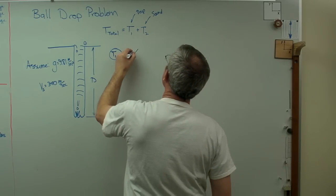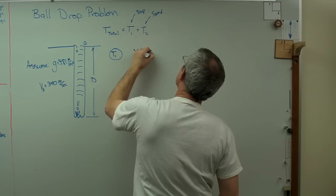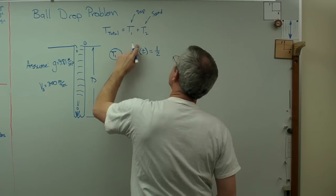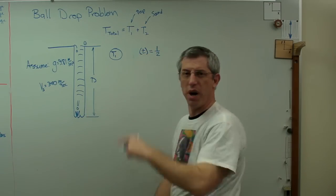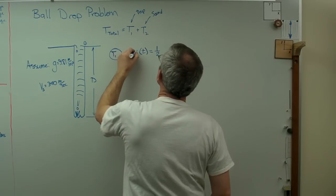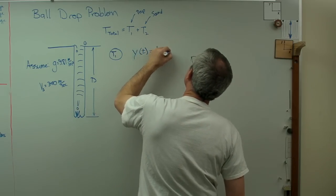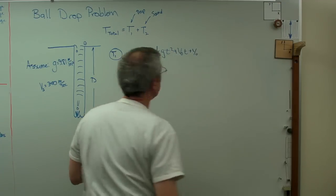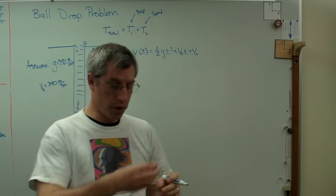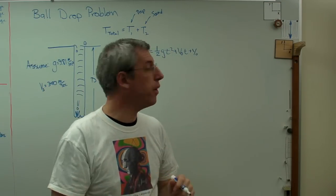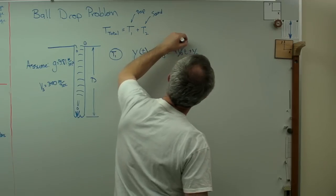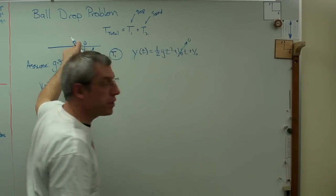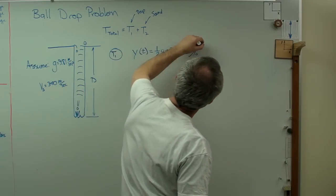We're dropping under constant acceleration, so we know the expression for that: y(t) equals one half g t squared plus v0 t plus y0. We can assume that we're going to just drop the rock, not throw it, so v0 goes to zero. We can put the origin of our coordinate system right there, so y0 goes to zero.